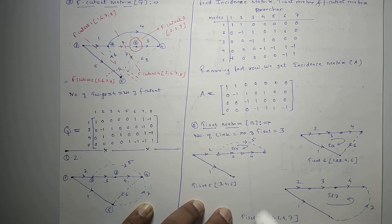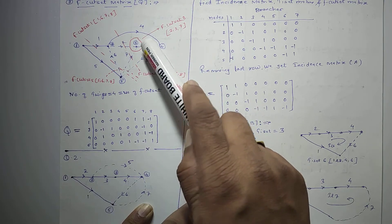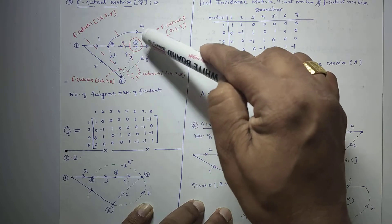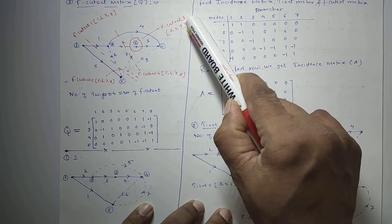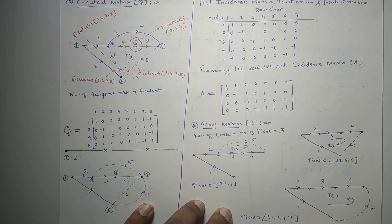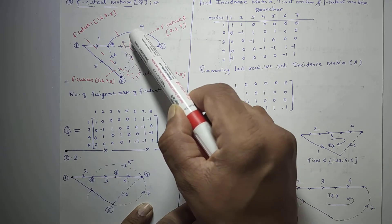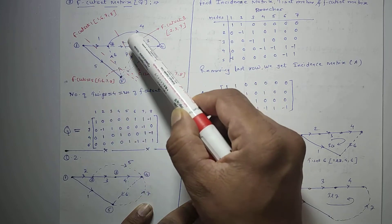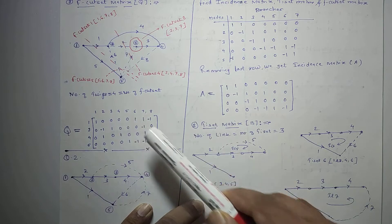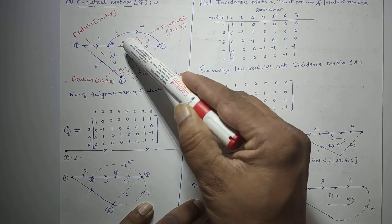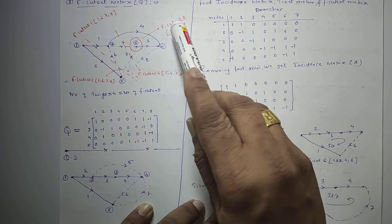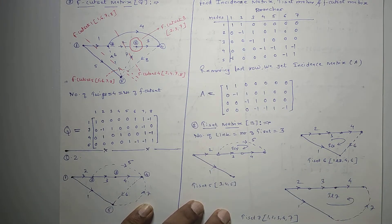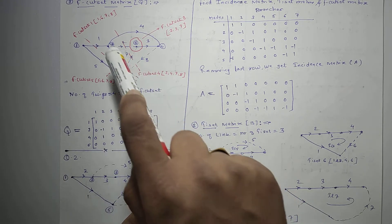For f cut set 3, making the appropriate cut isolates one node as one part of the graph, with the rest as the other part. The branches cut are twig 3 and links 2 and 7. Therefore f cut set 3 is formed by branches 2, 3, and 7.